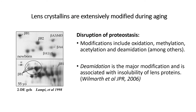As we continue to age, there can be changes or alterations done through these lens crystallins, and this kind of disrupts the proteostasis. There are many modifications that can happen to these lens crystallins — such examples are oxidation, methylation, acetylation, and deamidation, among many others. We specifically focused on deamidation because there's been some research and already published literature suggesting it could be the major modification associated with insolubility of lens proteins.